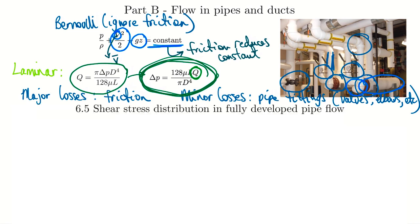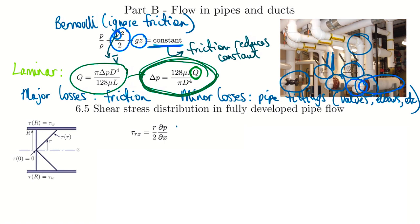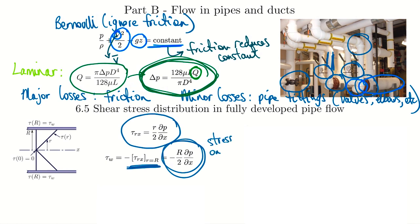We'll start in section 6.5 with the shear stress distribution in fully developed pipe flows. I've shown the shear stress distribution for the laminar case — this expression is actually applicable to both turbulent and laminar flows. With turbulent flows, though, we can't just substitute a shear stress equation and solve for the velocity profile because it's too chaotic. The wall shear stress can be calculated using this expression in both cases by setting the radius equal to capital R at the wall itself.